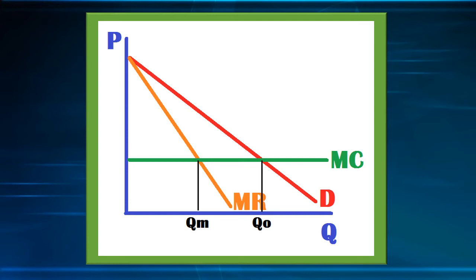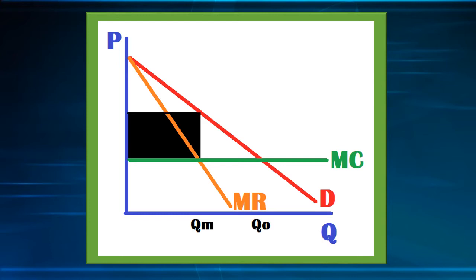When we have a monopoly, we will not be at the optimal quantity where marginal cost crosses the demand curve. Instead, with market power, we set quantity at the point where marginal revenue equals marginal cost. At this monopoly quantity, producers then set the price where this quantity hits the demand curve. This allows producers to take producer surplus shown as the black rectangle. Consumers will still have consumer surplus, shown as the purple triangle. This black area — the addition of producer surplus — represents the transfer of monopoly profit.